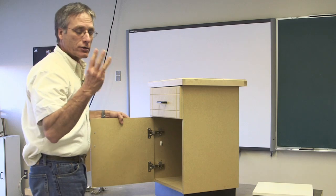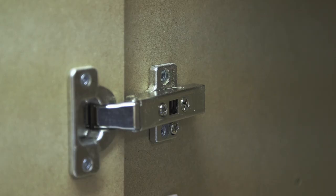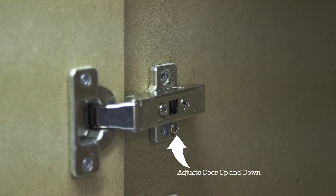So we have three screws. One of these screws moves the door up and down. One of these screws moves the door in and out. And another one of these screws adjusts the door for being crooked or not.